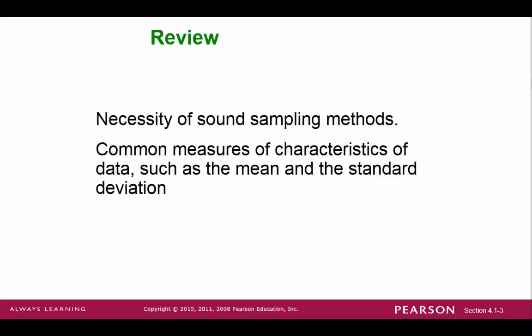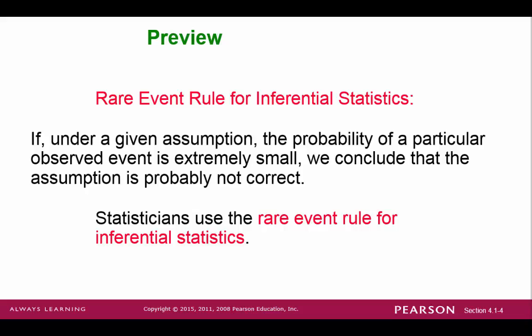Let's remind ourselves that it continues to be important to collect simple and random samples. And now, from last chapter, we have our basic descriptive statistics under control, especially the ideas of mean and standard deviation. We use probability as a bridge between descriptive and inferential statistics. One of the important concepts in creating this bridge is the rare event rule. The idea behind this rule is this: we can begin with a certain assumption of an event happening. If the laws of probability consider this event to be very unlikely, then the assumption was probably not correct.